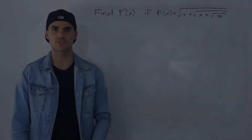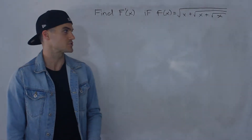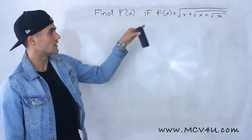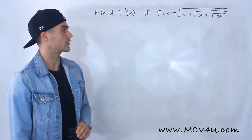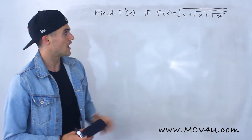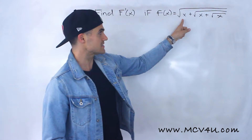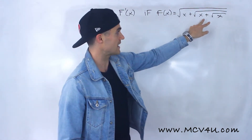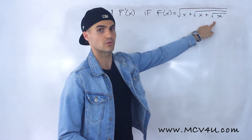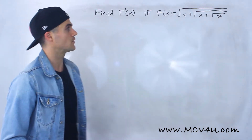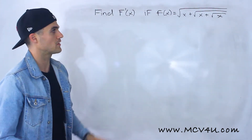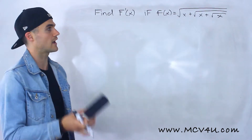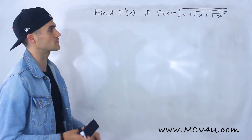What's going on everyone? Welcome back. Patrick here. Moving on to the next video, we've got to find the derivative of this crazy function. We've got the square root of x plus the square root of — inside that square root — x plus the square root of x. So lots going on here. Notice that we have a bunch of functions within functions, so we're going to have to use the chain rule to find this derivative.